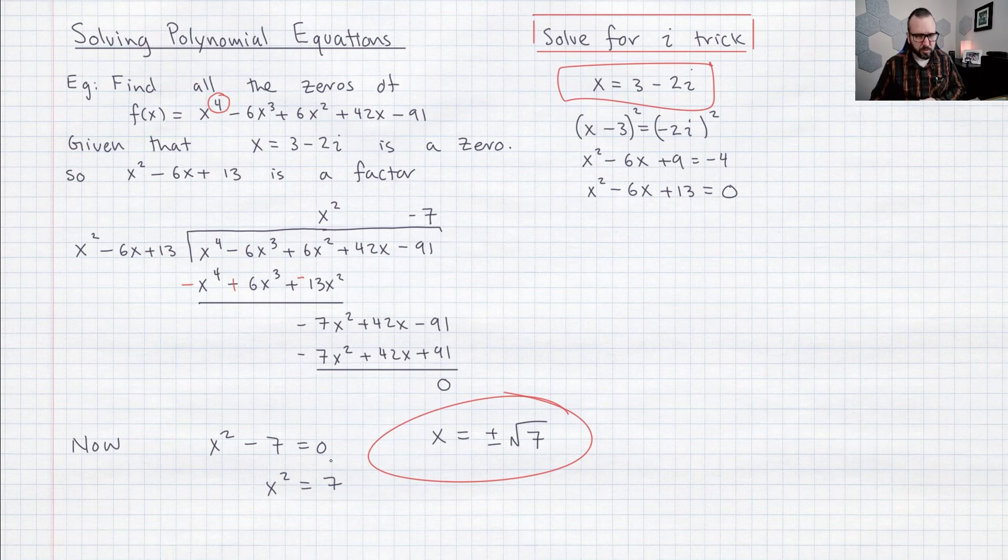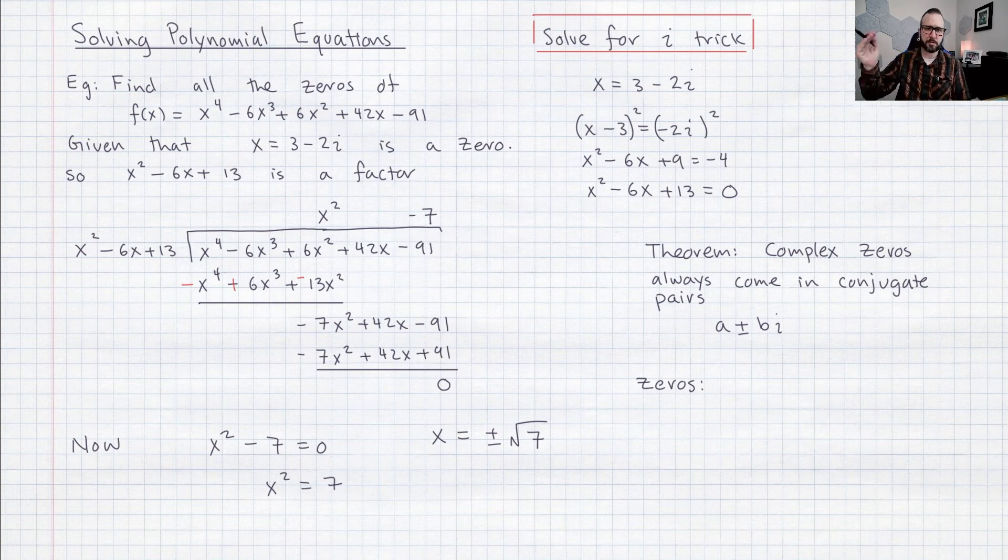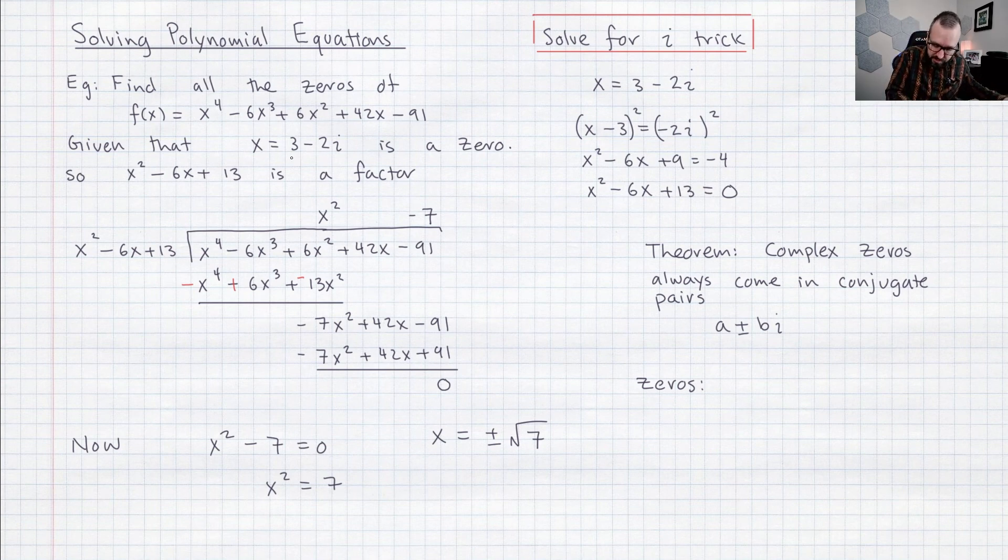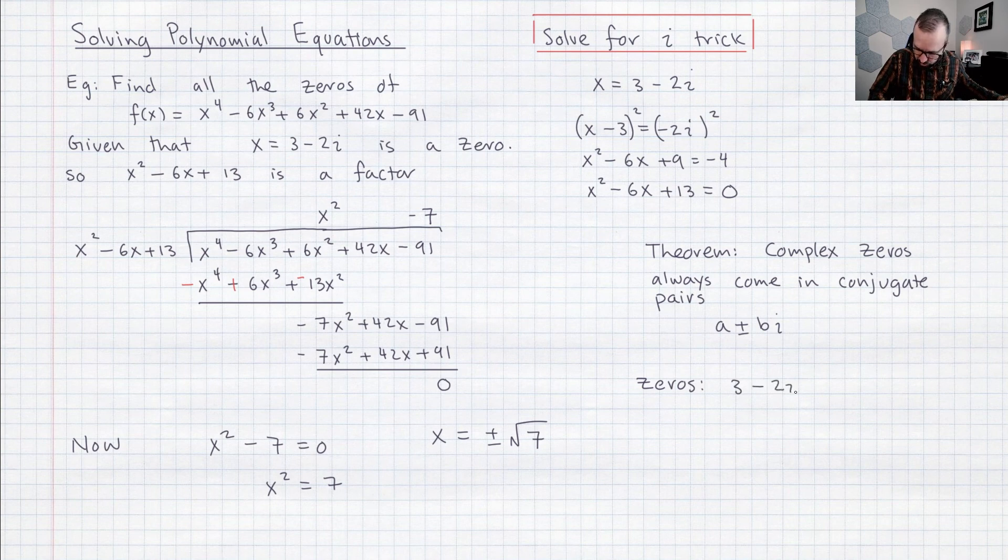Okay so I just want to share with you this theorem that complex zeros always come in conjugate pairs that actually makes sense if you want to just kind of have a look at the quadratic formula you can convince yourself that this is true. So what we know right now is we know this zero right here is of the form a minus bi so I've got one zero here three minus two i and then by this theorem I know that I've got another one as well it's got to be three plus two i.